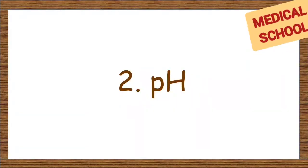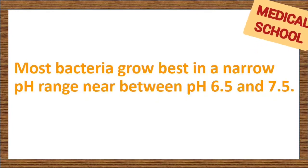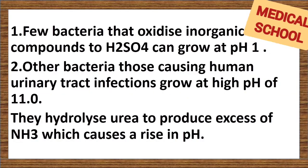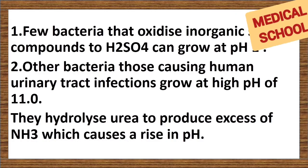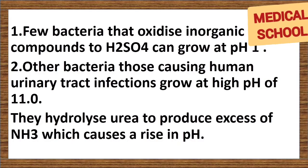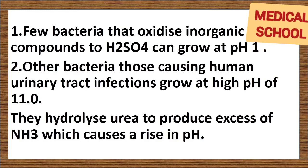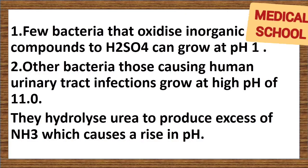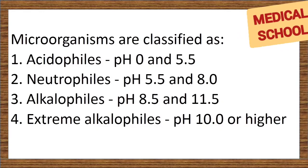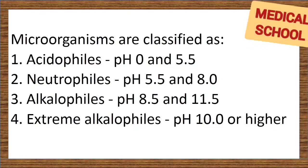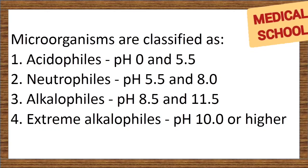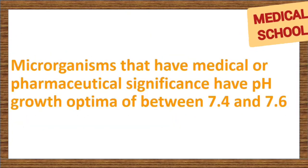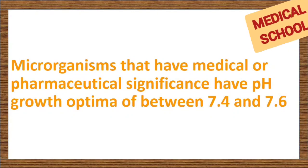pH refers to the acidity or alkalinity of a solution. Most bacteria grow best in a narrow pH range between 6.5 and 7.5. However, some can grow at extreme values. For example, a few bacteria that oxidize inorganic sulfur compounds to sulfuric acid can grow at pH 1. Bacteria causing human urinary tract infections can grow at high pH of 11 — they hydrolyze urea to produce excess ammonia, causing a rise in pH. Microorganisms are classified by pH preference as: acidophiles (pH 0–5.5), neutrophiles (pH 5.5–8), alkalophiles (pH 8.5–11.5), and extreme alkalophiles (pH 10 or higher). Microorganisms with medical or pharmaceutical significance have pH growth optima between 7.4 and 7.6.